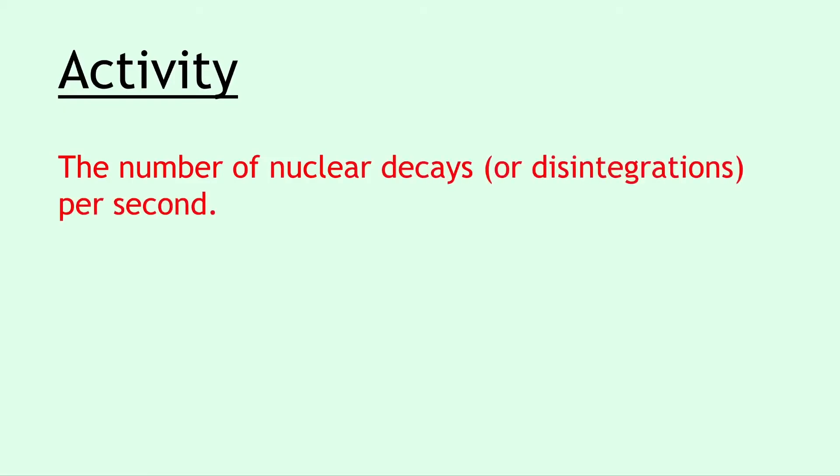Moving on we have activity. The activity of a radioactive source is defined as the number of nuclear decays or disintegrations per second. So instead of nuclear decays you can say disintegrations and you'll still get the mark for this.